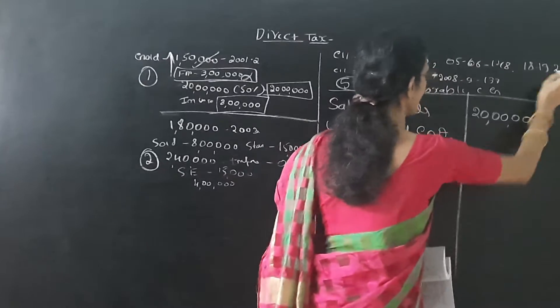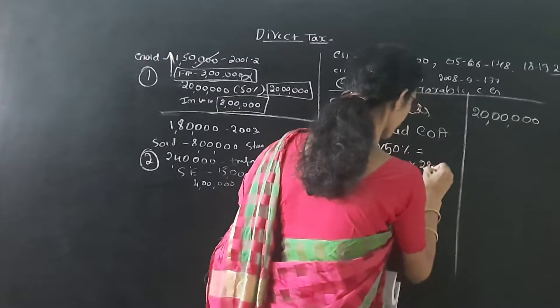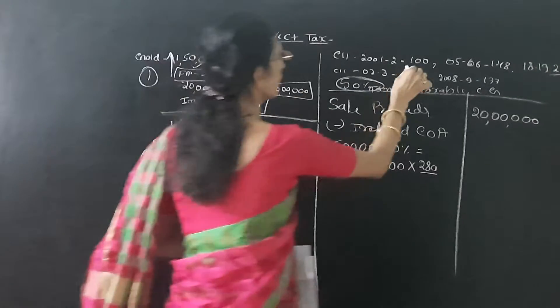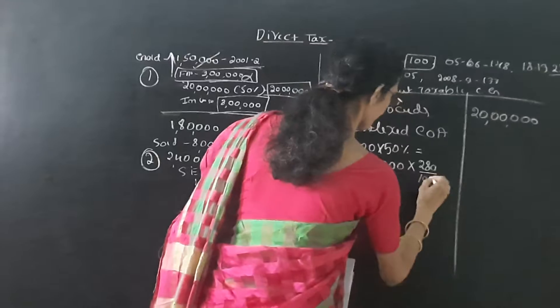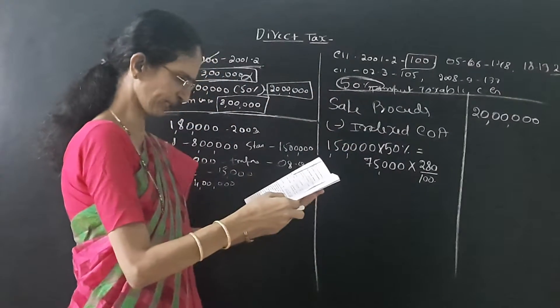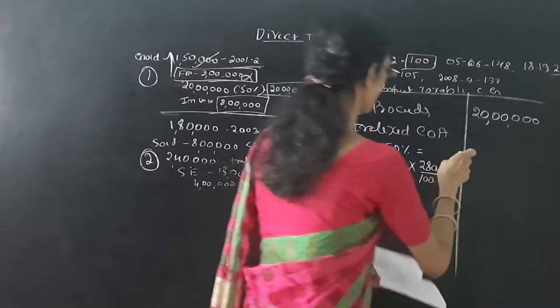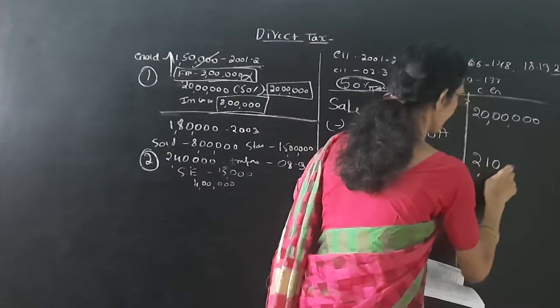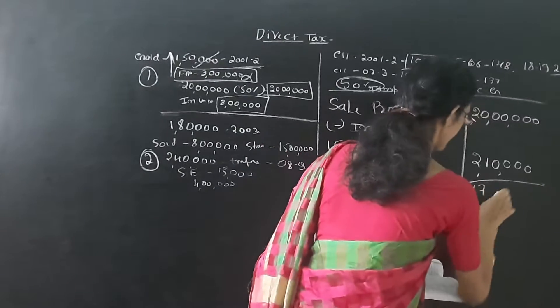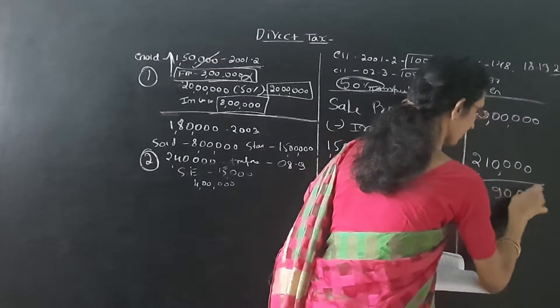Sold date is 18-19, so here we have to write 280. Then we have to see the purchasing date, that is 2001-2. So the index is 100. We get 2,10,000. So here we are getting 17,90,000.